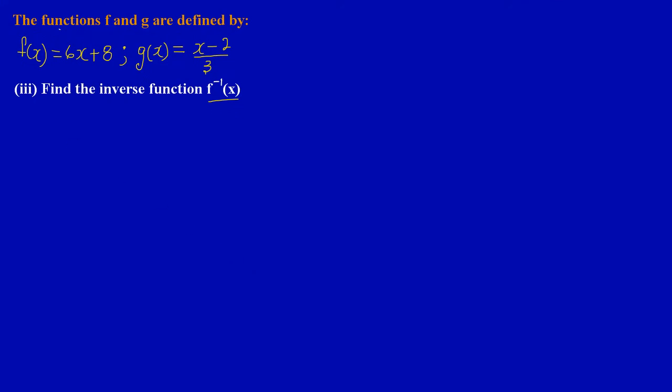Now when asked to find the inverse of a function, since they have asked us to find f⁻¹(x), then it simply means I'm going to look at the function f(x). Now let's write the function here. Let's say f(x) is equal to 6x plus 8. Now if you look at the original function, 6 is multiplying x and 8 is being added to the x.